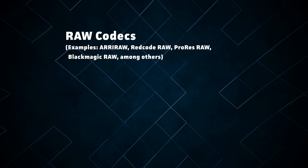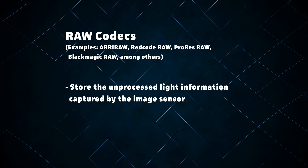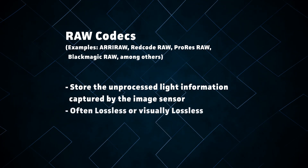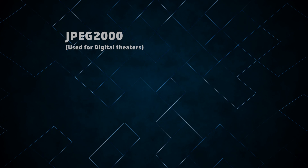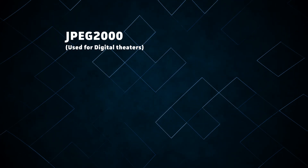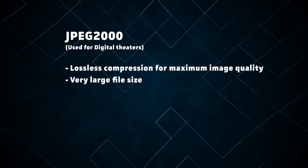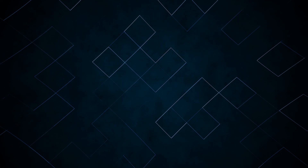In the realm of cinema, quality is the top priority. Because of this, most high budget films use raw codecs for capture, which retain every bit of detail captured by the image sensor, and they maintain visually lossless compression all the way to the theater screen. The standard codec for digital theaters is JPEG 2000, which is very different from normal JPEG. It's a lossless codec, which allows images to be blown up to huge scales without any loss in detail whatsoever.